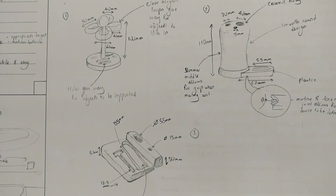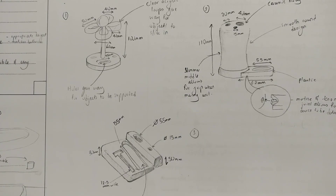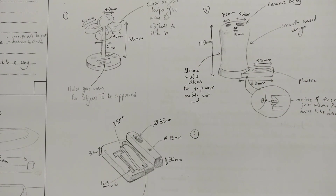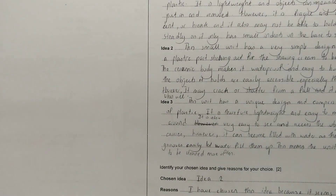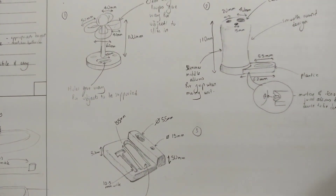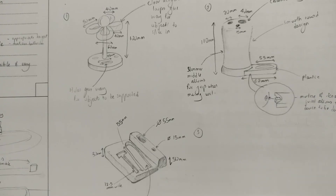Moving on to question C: develop and sketch three ideas. You're producing three initial ideas for the actual storage unit. You need to make sure you do at least three designs — if you only do two, you'll cut your marks down by a third, and with only one idea you'll lose two thirds. If there's not enough space on the first page for your three ideas, there is extra space on the next page. You have a big chunk of time — 24 minutes — to create three different designs.